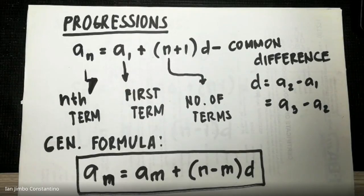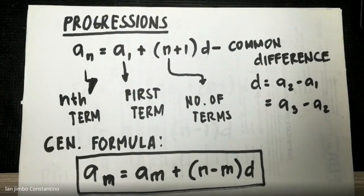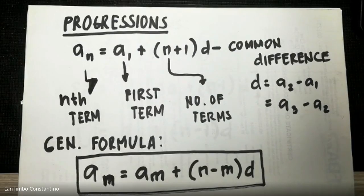For your infinite geometric sequence, that is a sequence that is never-ending but does have a common ratio. For harmonic progression, when you get the reciprocal of your arithmetic progressions, you will arrive at harmonic progression. I will elaborate on it later.